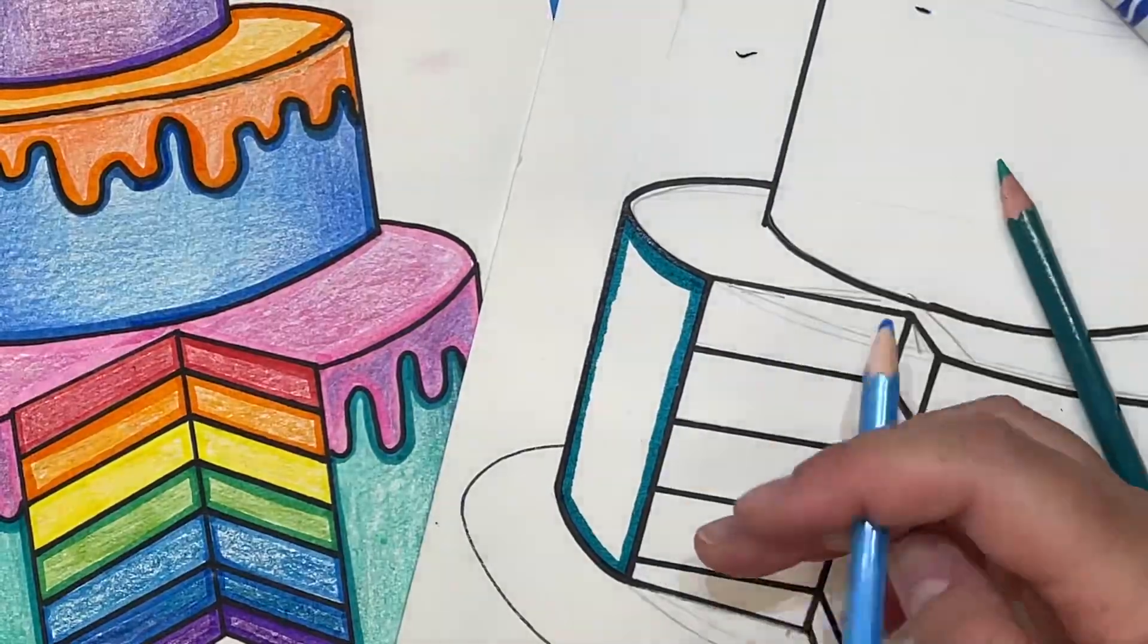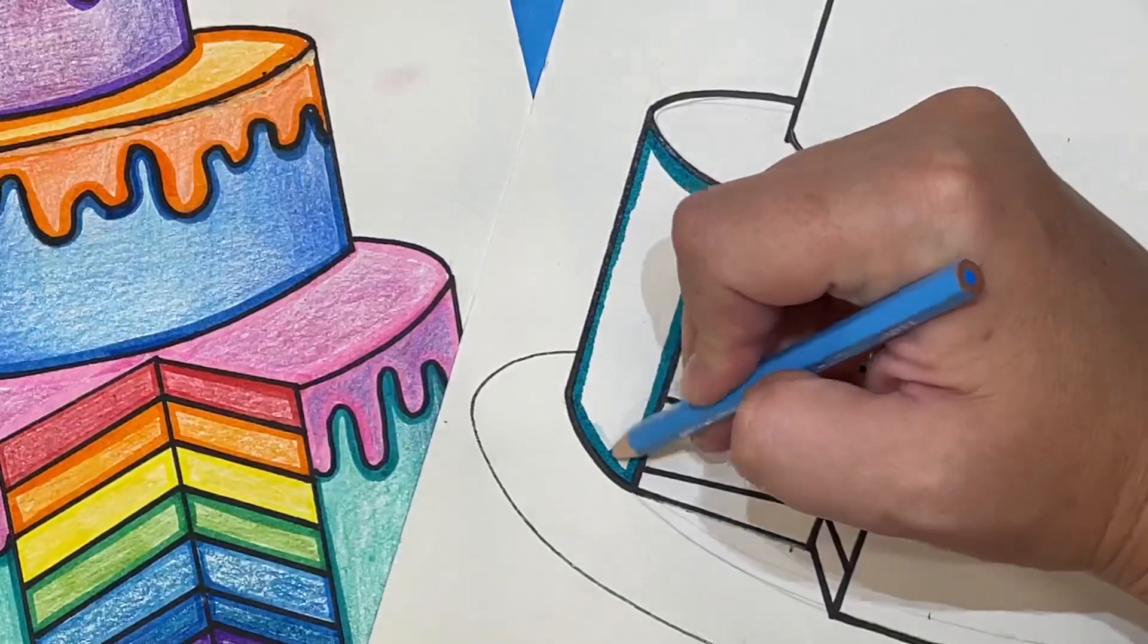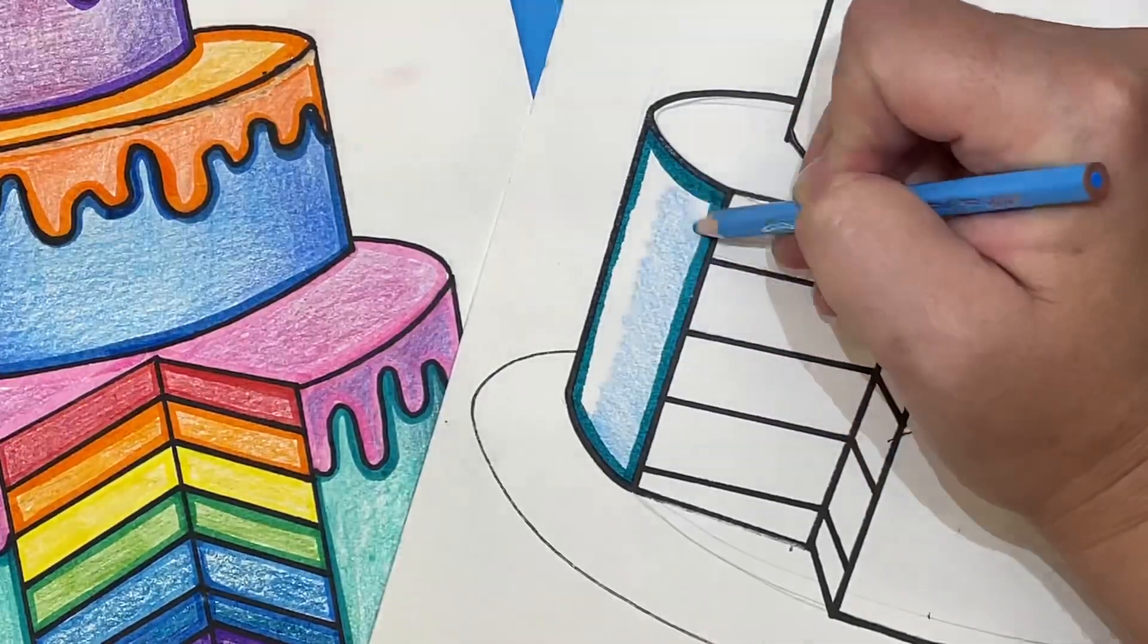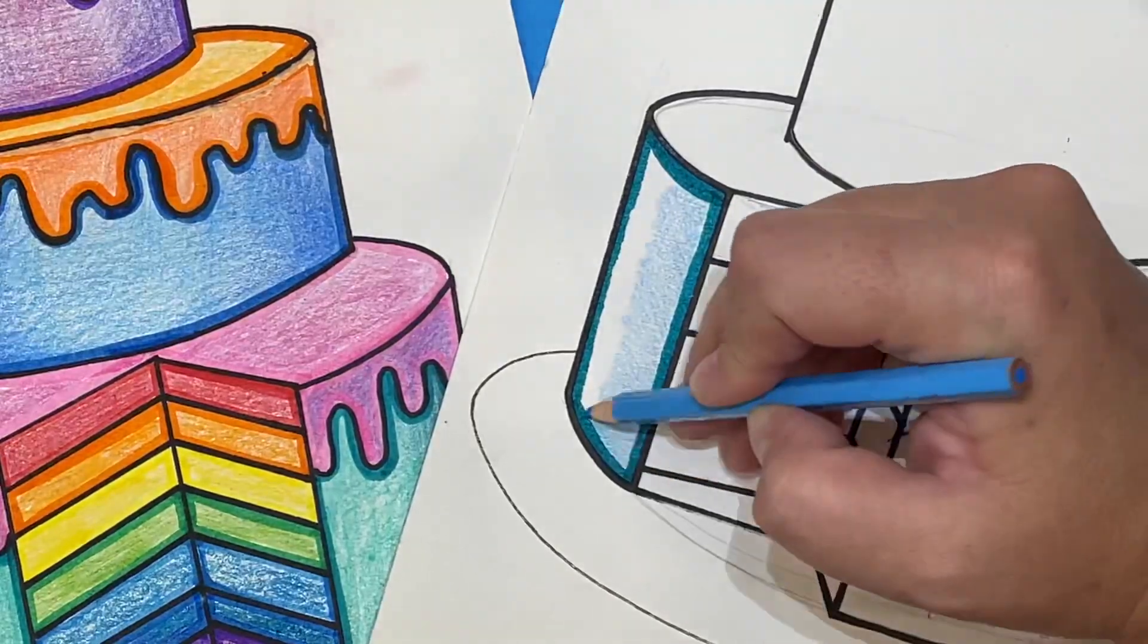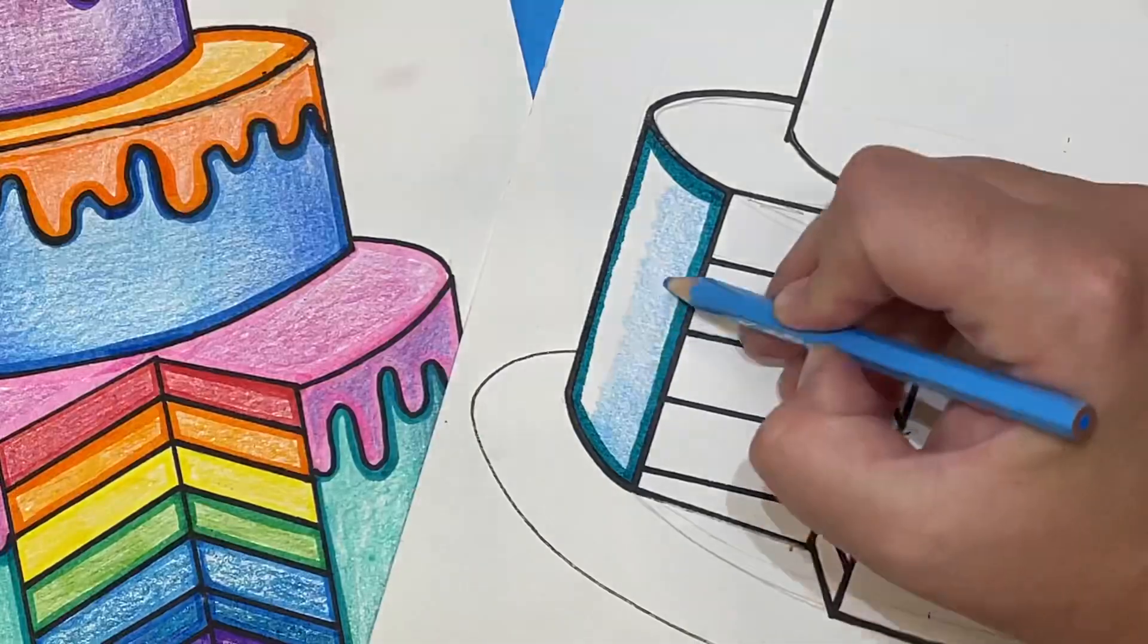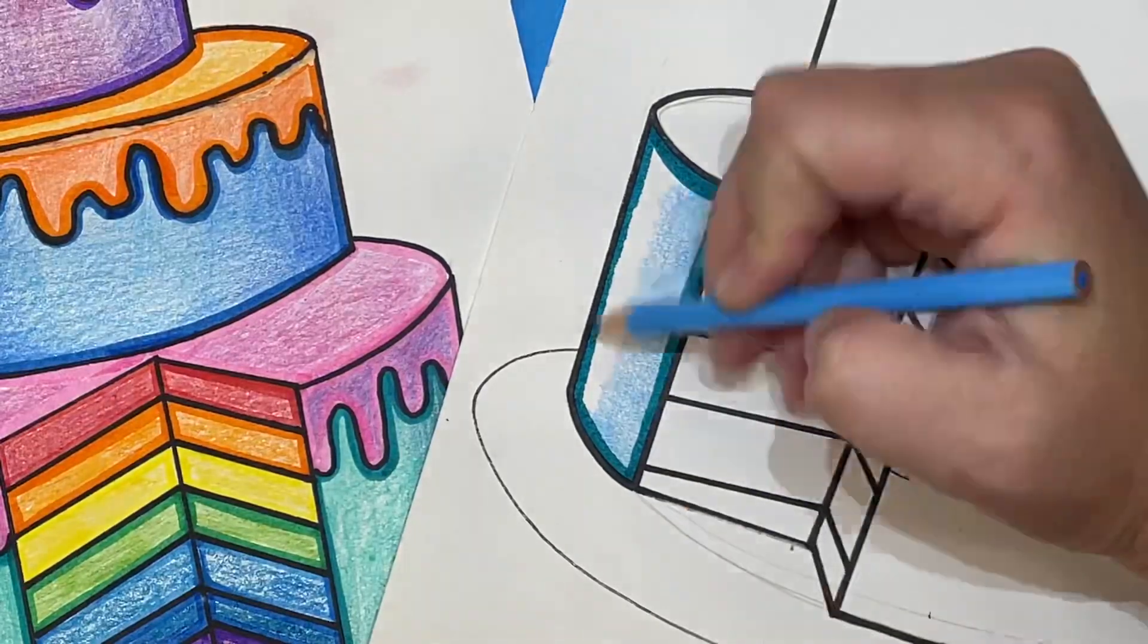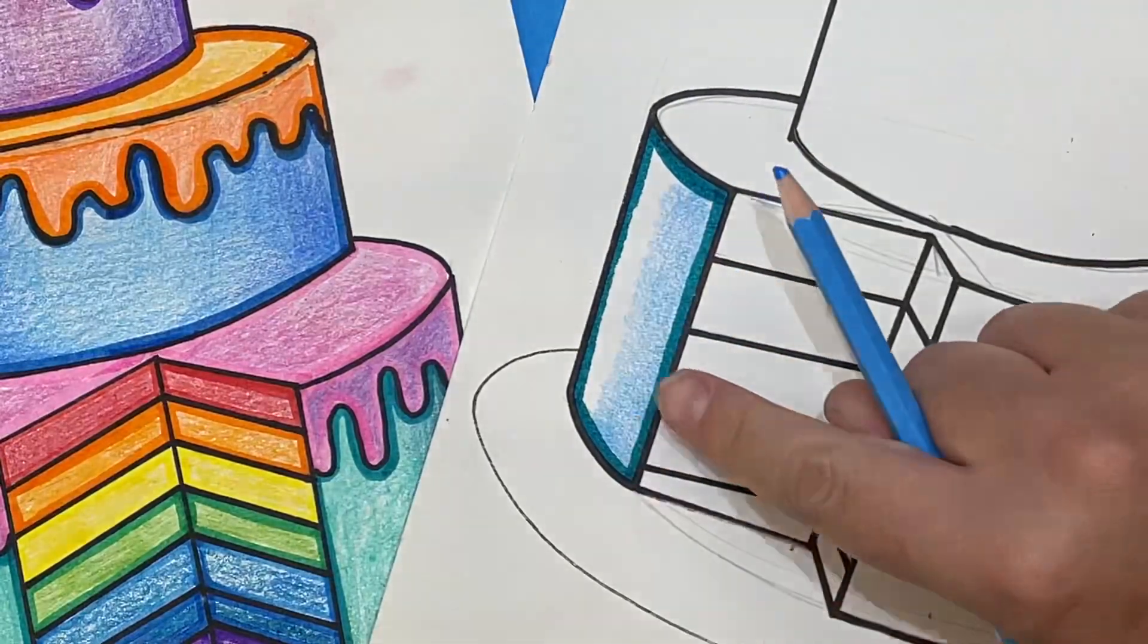Next I want to take a colored pencil that's a little bit lighter and I want to color lightly with my colored pencil. Whenever I'm using colored pencil I color in three directions, so that means I've colored side to side. Now I can color up and down and diagonal. This ensures that I don't see any of my colored pencil marks. I just see that beautiful color.